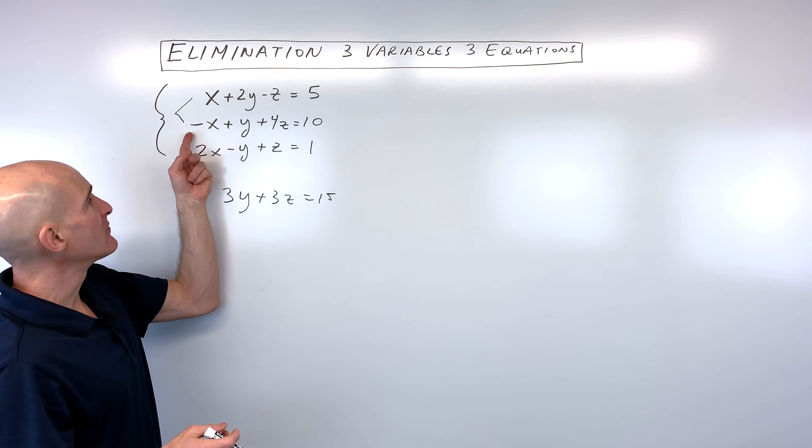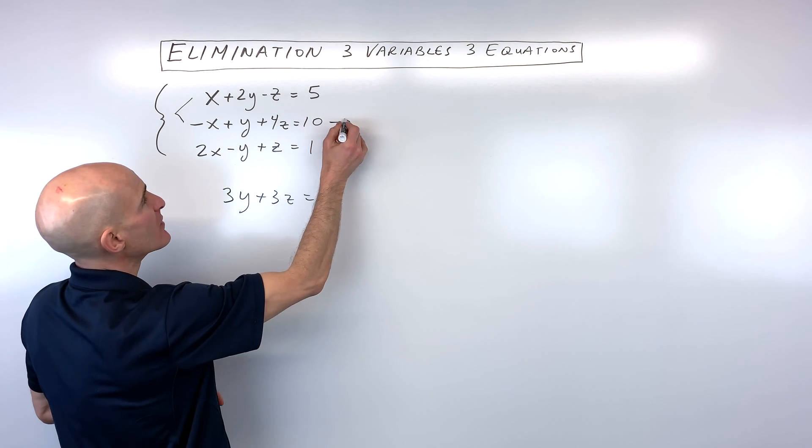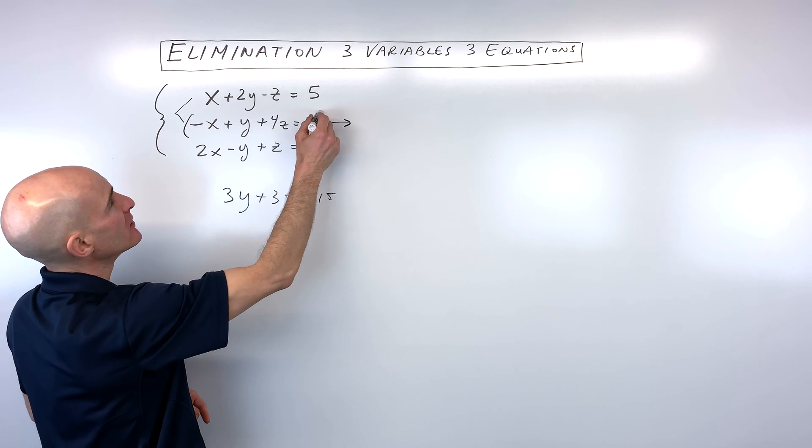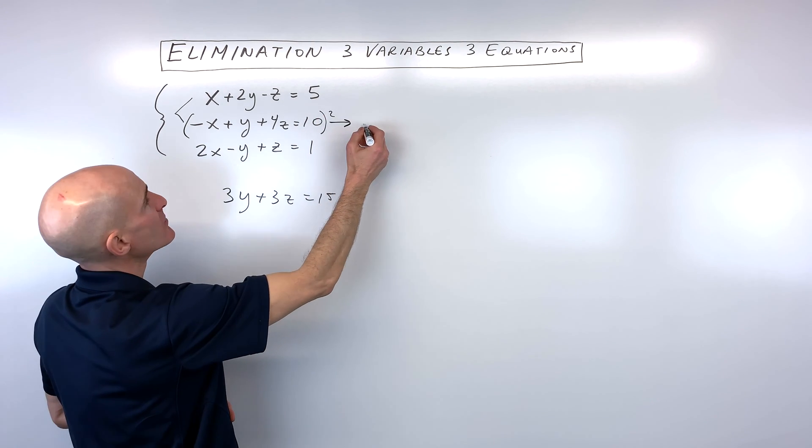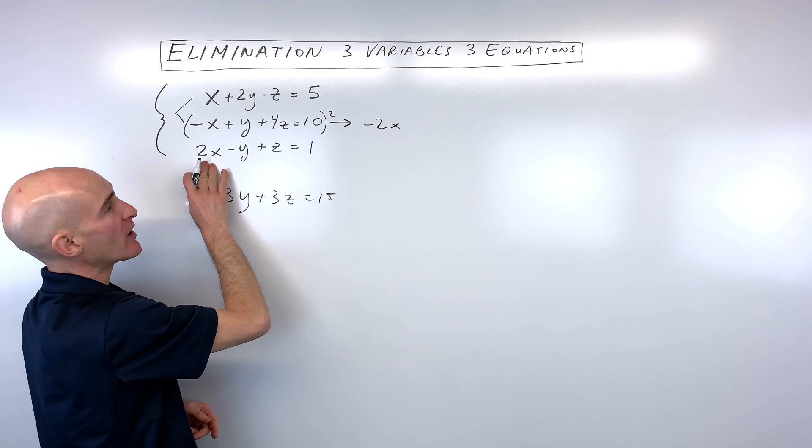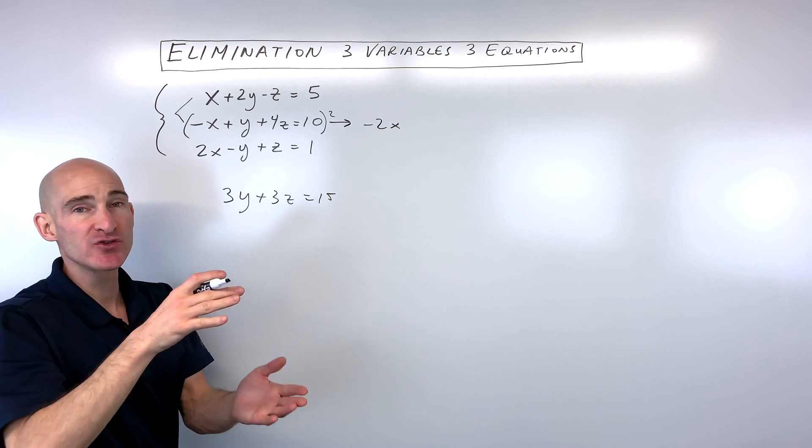I'm going to combine it with the middle one here. And what I'm going to do is multiply this whole equation by 2. And the reason is, as you'll see in just a moment, I'm going to get negative 2x. When I add that to this one, the positive 2x, those are going to cancel.